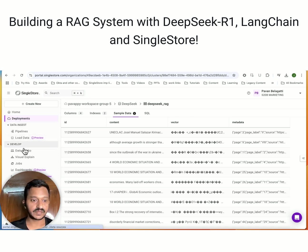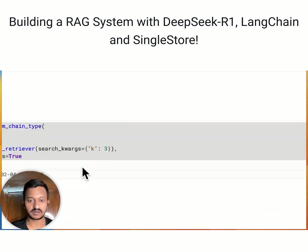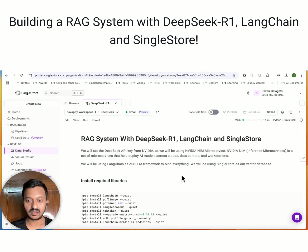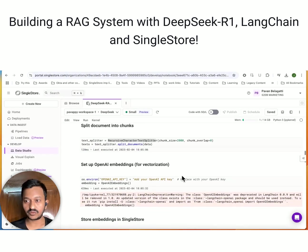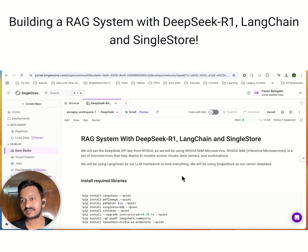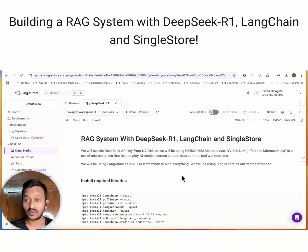Let's go back to the tutorial. I'm going to share the repo link so you can go through it and try out yourself how to build a simple RAG system with DeepSeek R1, LangChain, and SingleStore. Hope you liked the tutorial and everything I covered. I also hope you go and try out this tutorial yourself. Thanks!